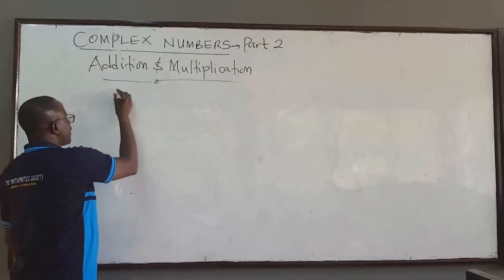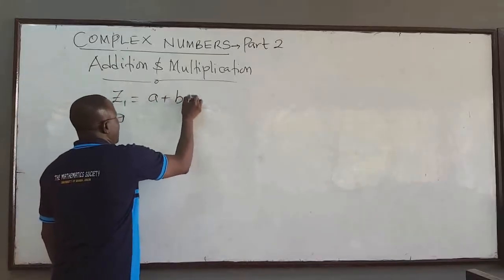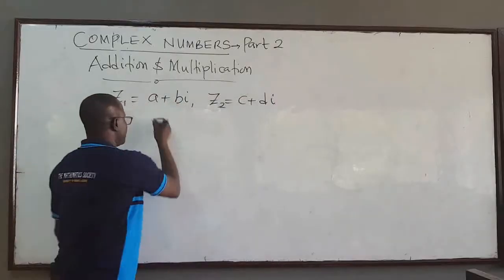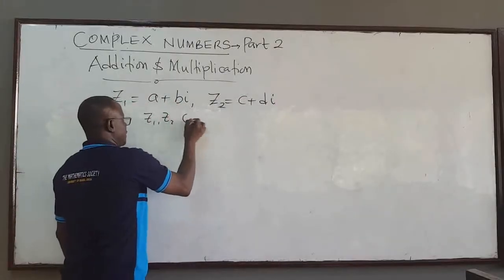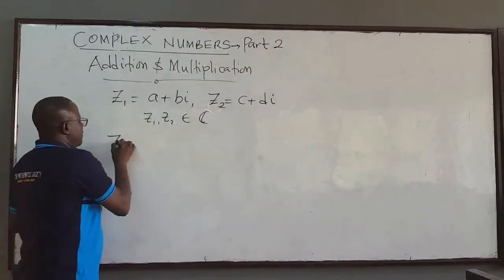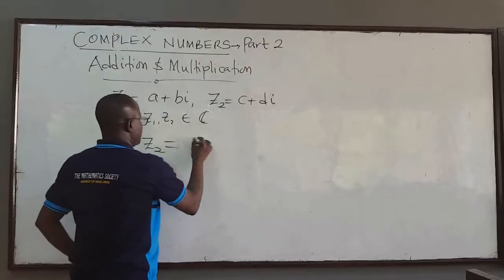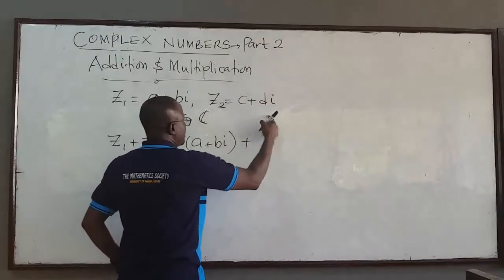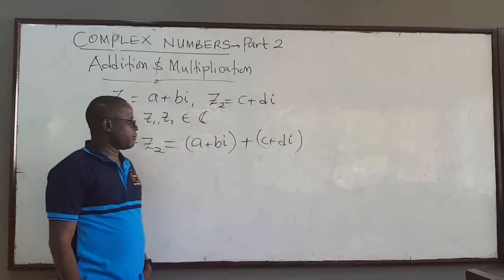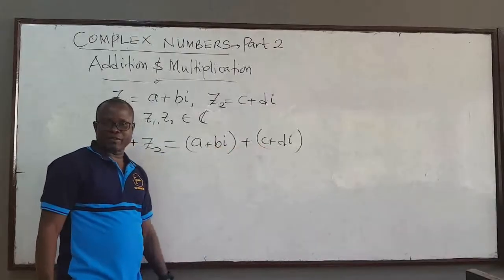So given two complex numbers — let's say Z1 equals A plus Bi, and Z2 equals C plus Di — both Z1 and Z2 are in the complex number set. The sum of Z1 and Z2 is pretty straightforward. You add the first complex number, A plus Bi, to the second, C plus Di. What you do is just add the real parts of the complex numbers and also add the imaginary parts of the complex numbers.